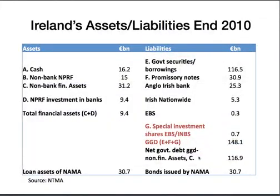Here are Ireland's assets and liabilities at the end of 2010. The assets are actually pretty low quality — cash, the non-bank national pension reserve fund, financial assets, and investment in the banks. There's no chance of getting $9.4 billion back from that investment. Meanwhile, government borrowing securities total $116 billion, plus promissory notes to Anglo-Irish Bank, five billion to Irish Nationwide, and some money to ESB. The balance sheet is not looking good in 2010, and the bonds issued in NAMA and the loan assets of NAMA are, quote unquote, off the books.